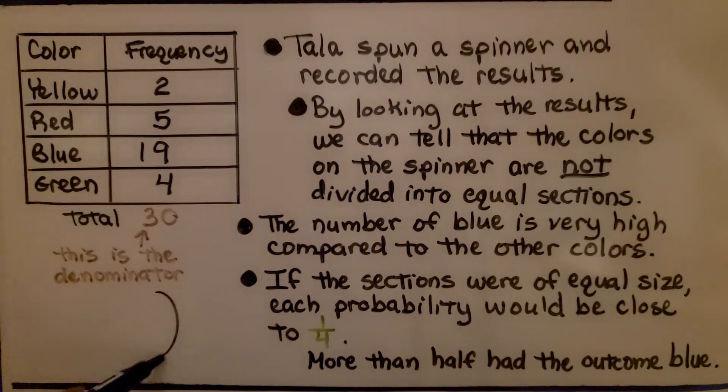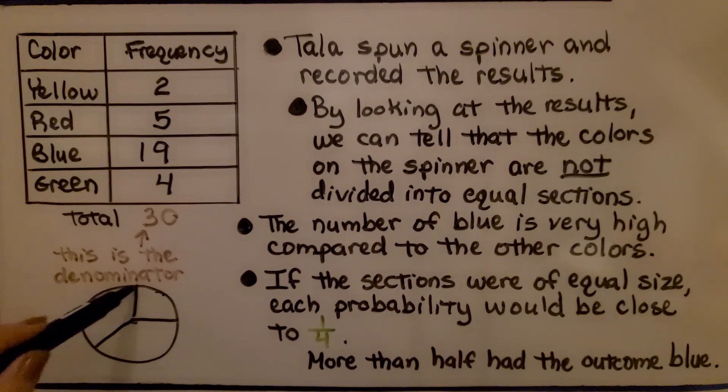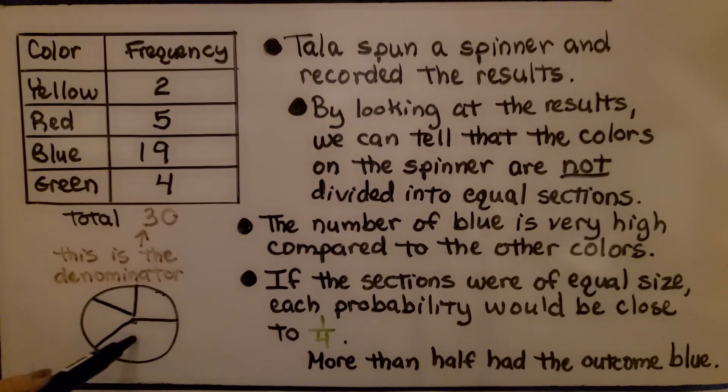If there's four colors on the spinner, it might be that the blue section is this big, and then the other sections are this big. That would account for the blue having such a high number.